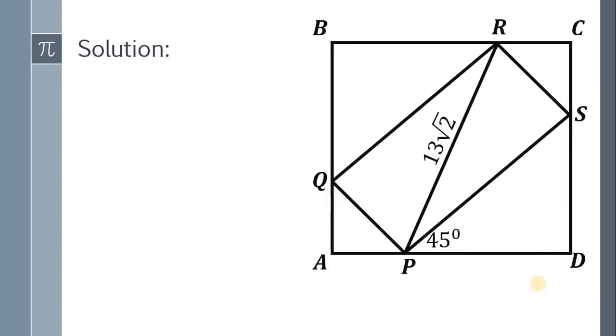First thing to notice is we have four isosceles right triangles: triangle PDS, triangle RCS, triangle QDR, and triangle QAP. Those four triangles are isosceles right triangles.